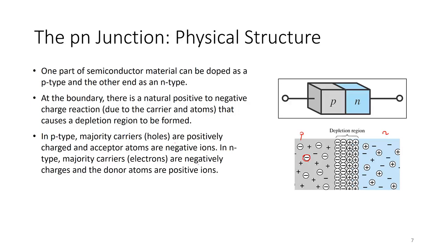On the N-side, the majority carriers are electrons. The donor atoms, from group 5, have lost one electron and are now positively charged. The positive sign bound by a circle in the diagram is not a hole — it is a donor atom that is positively charged.